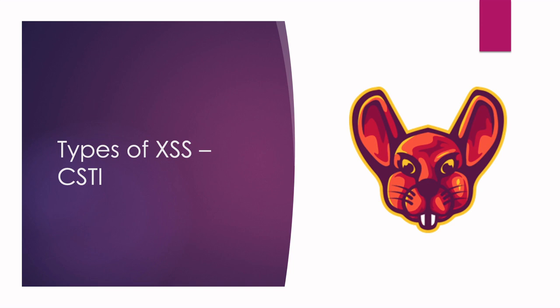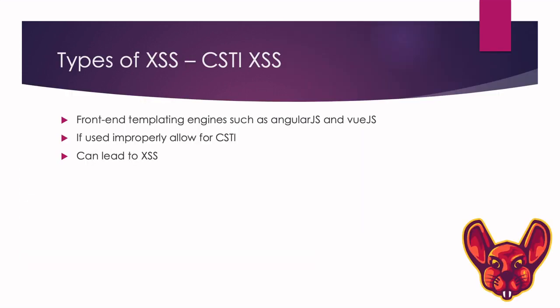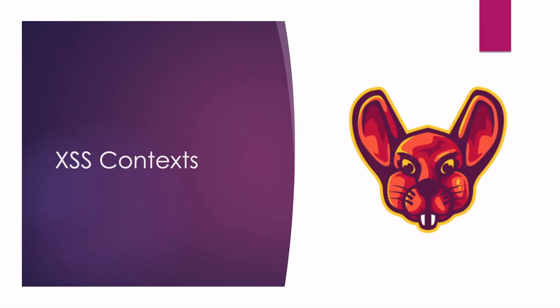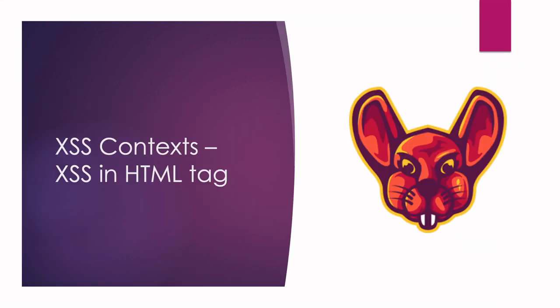CSTI, or Client-Side Template Injection, occurs when client-side templating engines are used to make development easier — developers use components to build UIs. But if you configure your engine incorrectly, this can open the door for cross-site scripting. It's one more type illustrating just how many XSS variants exist.